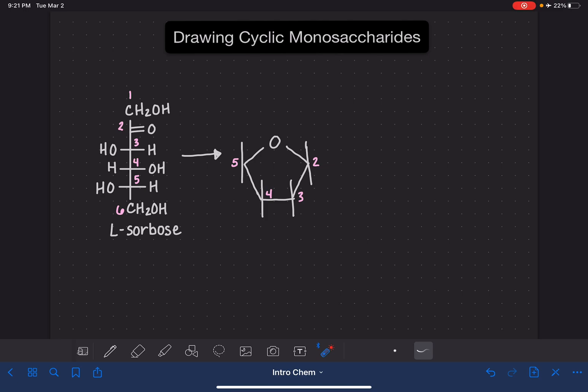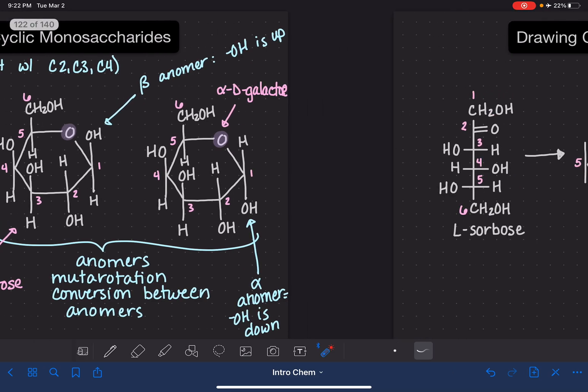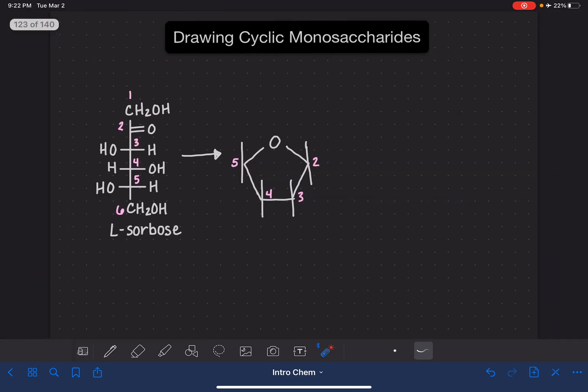With ketoses, it's going to be easier if we start with carbon number three and carbon number four. Remember with the aldoses, when we were drawing these structures, it was going to be easier for us to start with these guys. The carbon atoms that come after the carbon-oxygen double bond, that's going to be the case here as well. So we want to start with the carbon atoms that come after the double bond, work on those guys first.